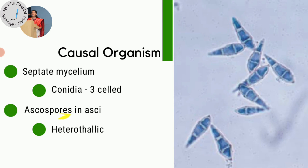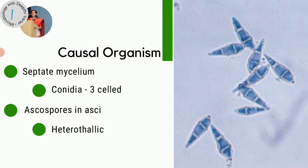The sexual spores are known as ascospores, held in sacs called asci, which are bound in a fruiting body called the perithecium. The organism is heterothallic in nature, meaning the male and female fungus are found as different individuals on different hyphae. When sexual reproduction does occur, it results in the formation of hyaline fusiform-shaped ascospores - spindle shaped with tapering ends and three septa.